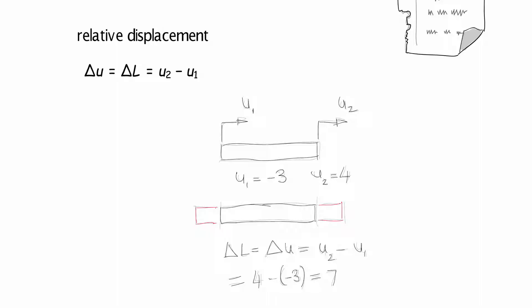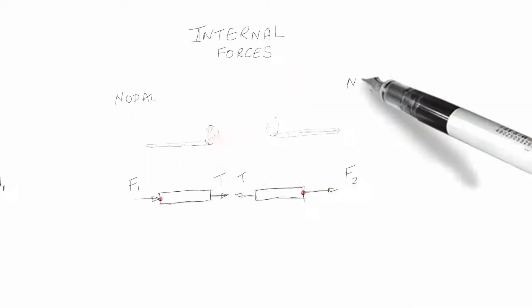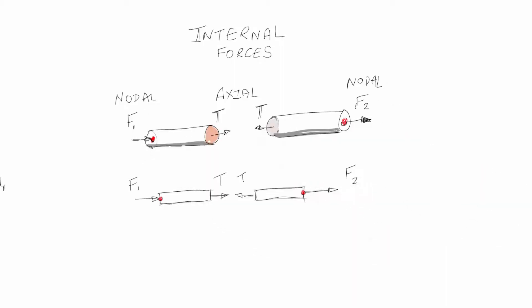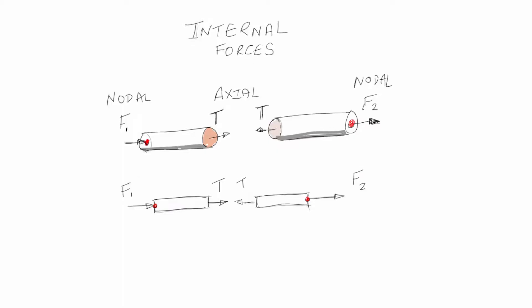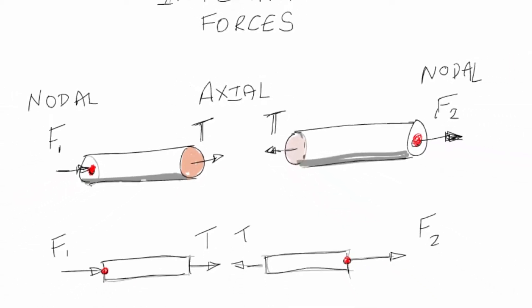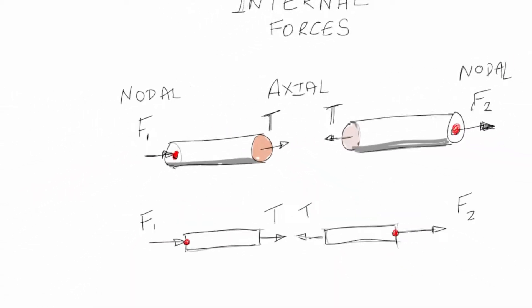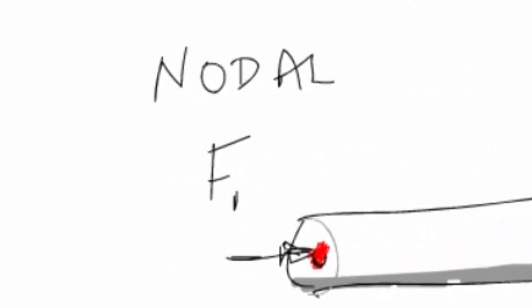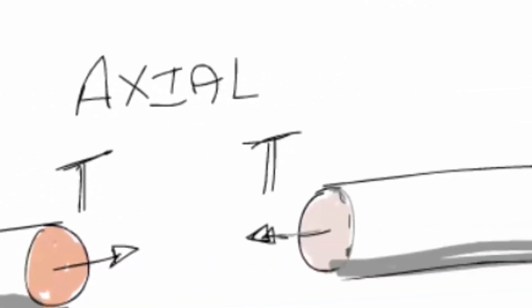Now we look at the force balance within the rod. There is an internal axial force T which is in balance all along the rod. If we take a slice in the middle of the rod, we can see the balancing forces T on both cut faces. Each end of the rod is connected to a node. These nodes have internal nodal forces F1 and F2.